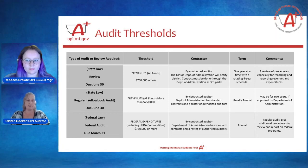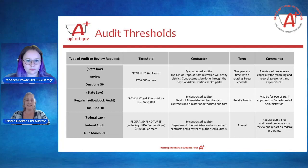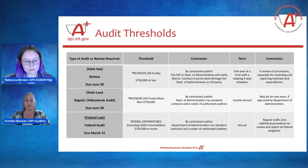If you have $750,000 or less in revenues, you're required to have a review done. Those are due June 30th. They're called yellow books. If you have $750,000 or more in federal expenditures, then you are required to have a federal audit, and those are due March 31st. We recommend that you reach out to an auditor off of the auditor roster to set up a contract and schedule your audit as early as you can. We are short on auditors and some districts are finding that they can't find an auditor if they aren't scheduled early enough.